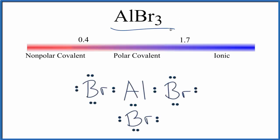Let's take a look at whether AlBr3 is polar or nonpolar. This is aluminum bromide.